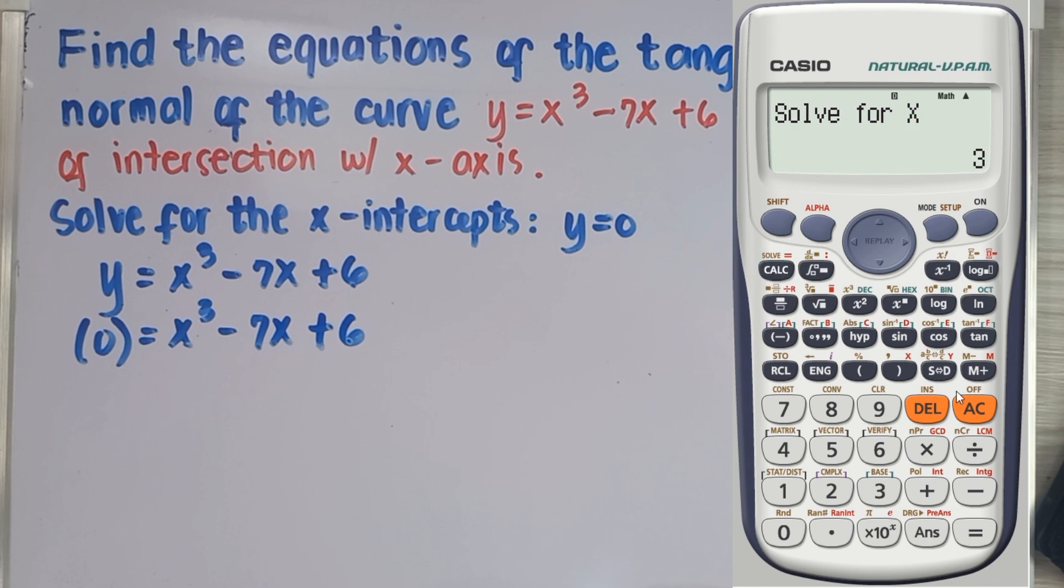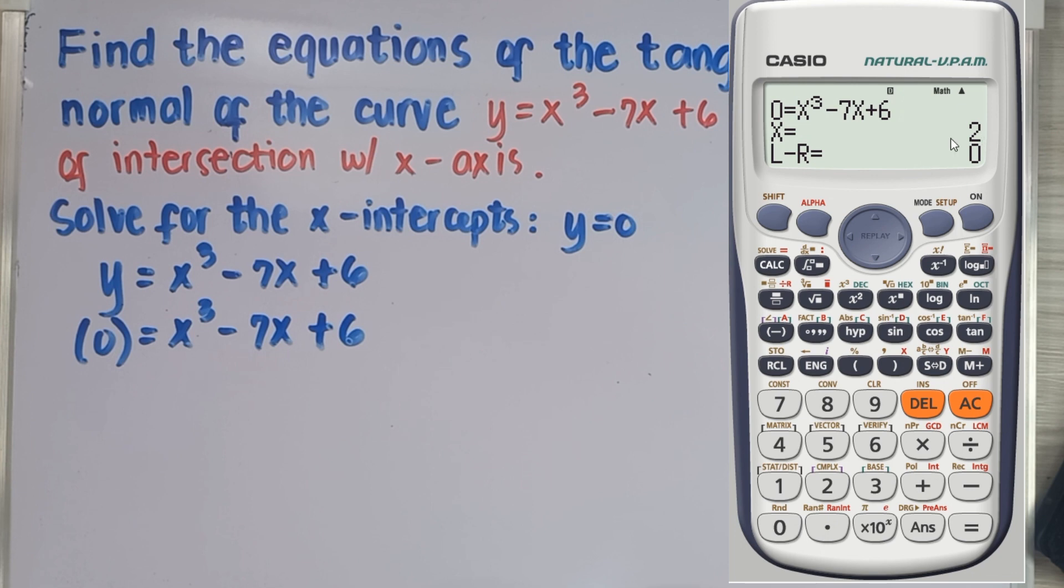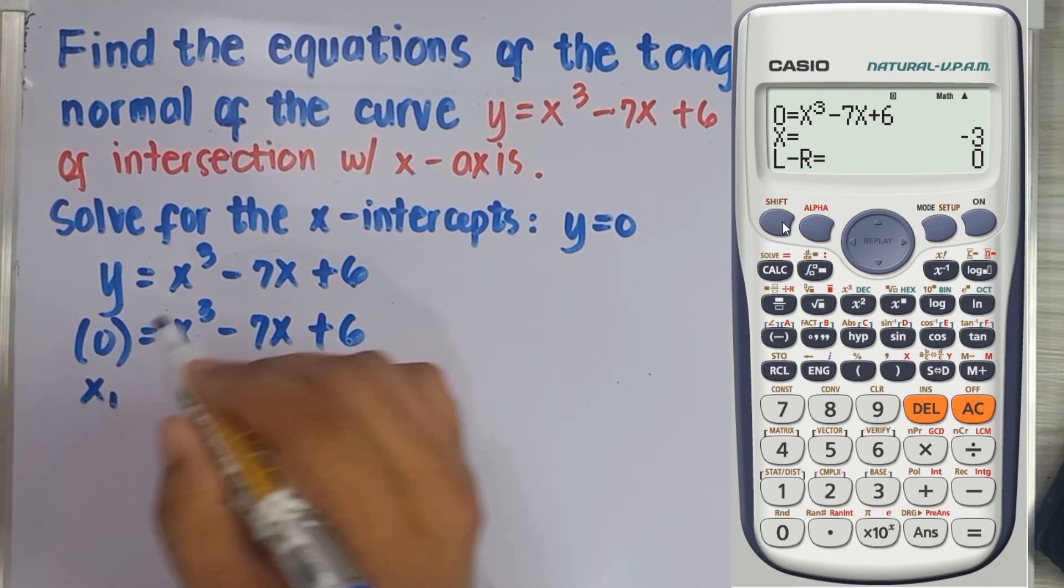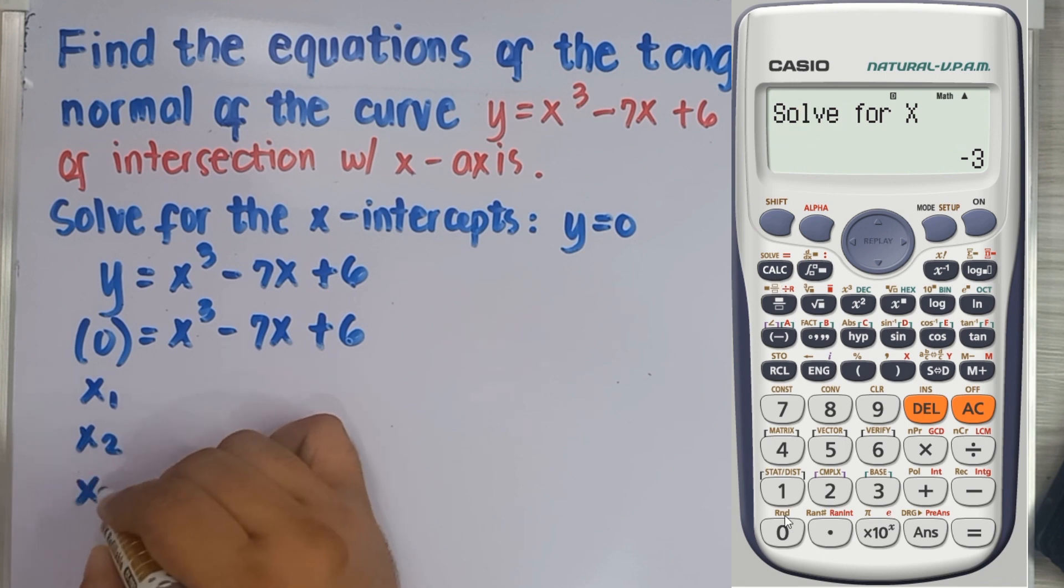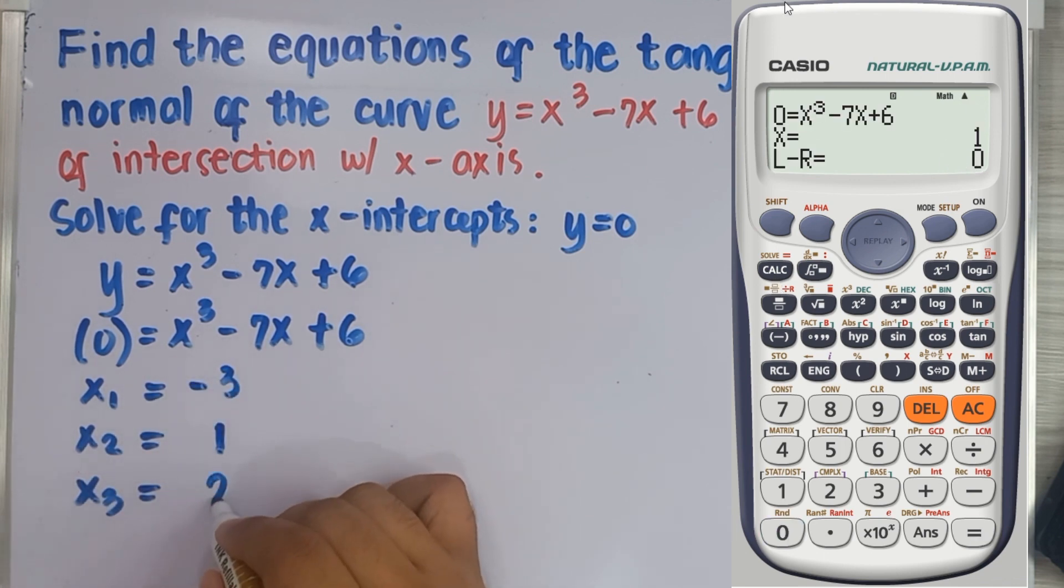In here, we can input any value, for example input 10, then equals. The calculator will give you the answer nearest to 10, and that is 2. Let's assume that this is the largest value of x. Press shift, solve again, and this time input a very small number, negative 99999, and it will give you the smallest value of x, which is negative 3. Let's try again and input 0, then equals. It will give the third value of x, which is 1.